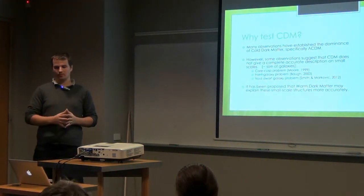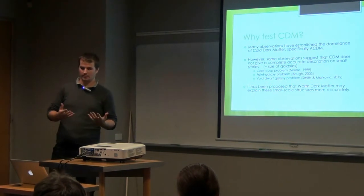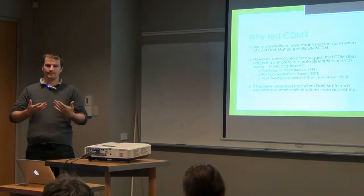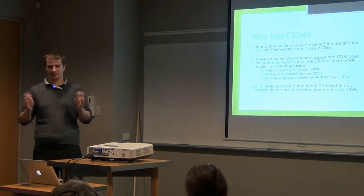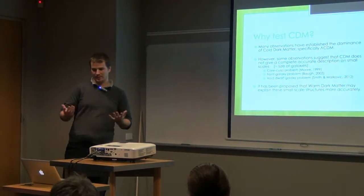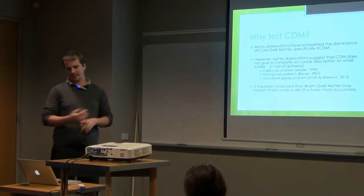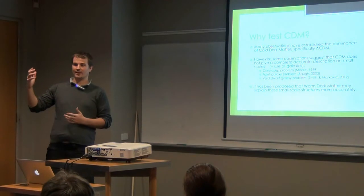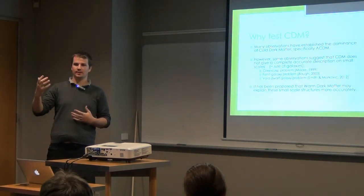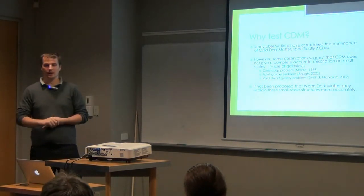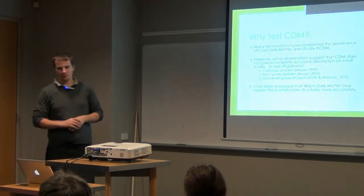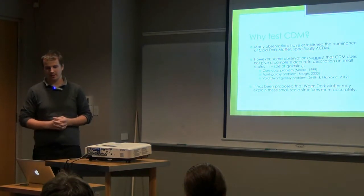So there is the core-cusp problem, where the cores of galaxies seem to be less cusp-like than they are supposed to be given the simulations. There is the faint galaxy problem, as there are fewer faint galaxies around galaxies like our own than are predicted. And there are fewer dwarf galaxies in voids than are predicted to be.